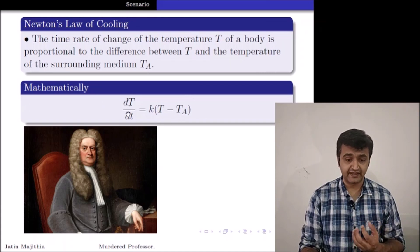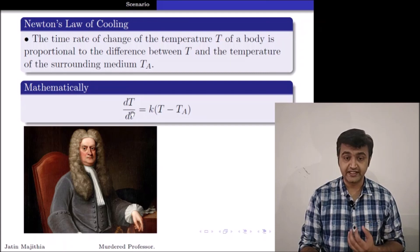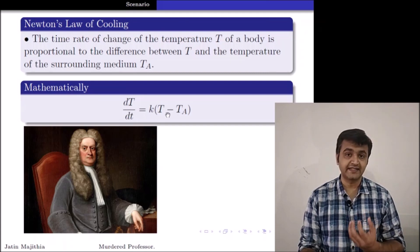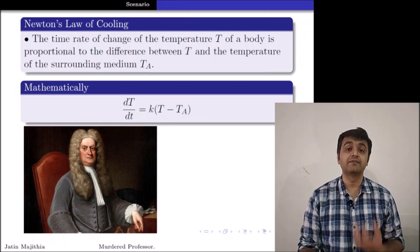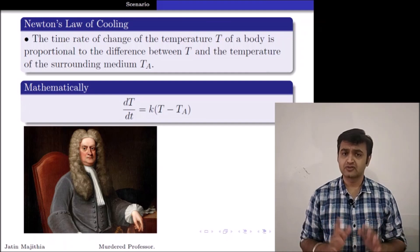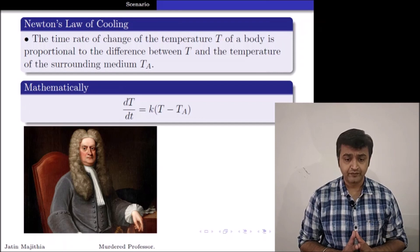So what I have is mathematically, if I write dT by dt is equal to K times T minus T suffix A, where K is called as a proportionality constant. So this is nothing but Newton's law of cooling.